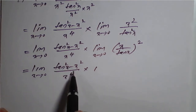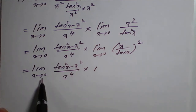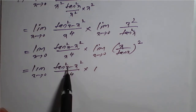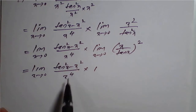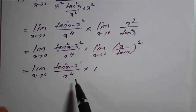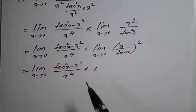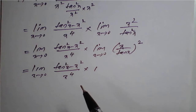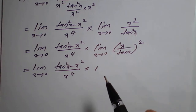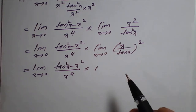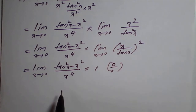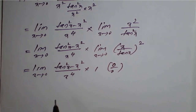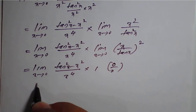Now we need to evaluate limit x tends to 0 of (tan square x minus x square) over x raised to 4. Applying x tends to 0 gives 0 minus 0 over 0, which is 0 by 0 form. So we will apply L'Hôpital's rule.